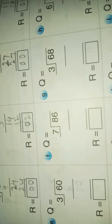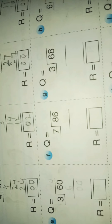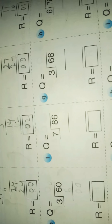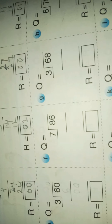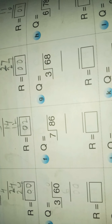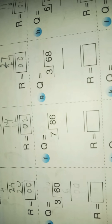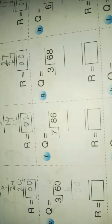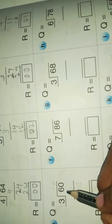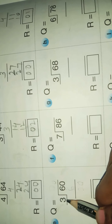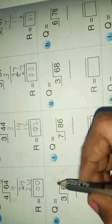Today's class is 20th November 2020. In today's class we will continue with some more examples of division of a 2-digit number by a 1-digit number. Let us start the class now. The given problem is 60 divided by 3.